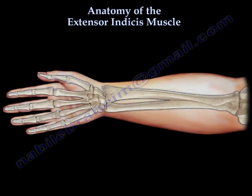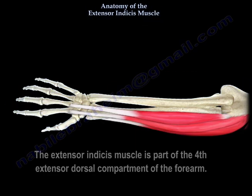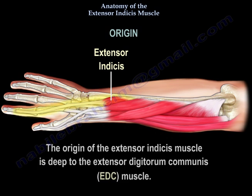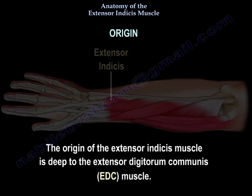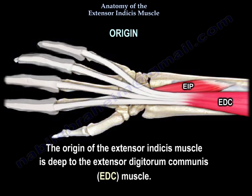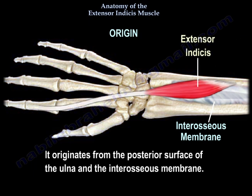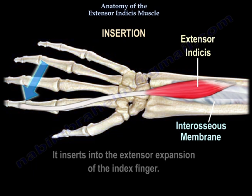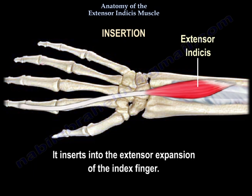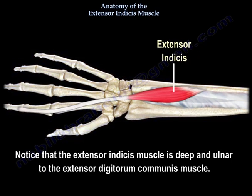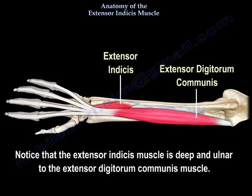The extensor indicis muscle is part of the fourth extensor dorsal compartment of the forearm. The origin of the extensor indicis muscle is deep to the extensor digitorum communis (EDC) muscle. It originates from the posterior surface of the ulna and the interosseous membrane, and it inserts into the extensor expansion of the index finger. Notice that the extensor indicis muscle is deep to the EDC muscle.